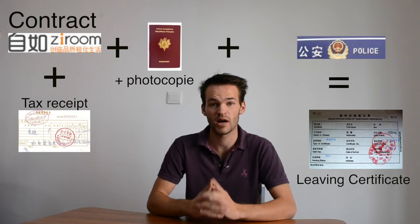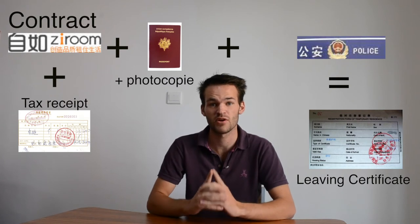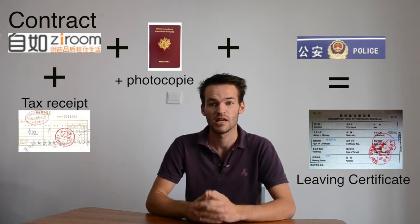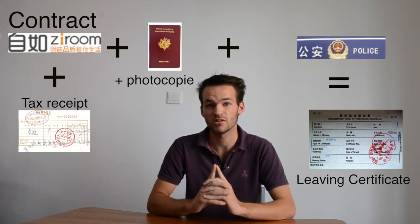With the tax receipt, your contract, and your passport, you need to go to the police station to get a living certificate. This living certificate is free but really important — you need it to register at university. Don't lose it. When you don't speak the language it's kind of hard, so ask a Chinese friend or even Homelink, as they can help you go through these different steps.